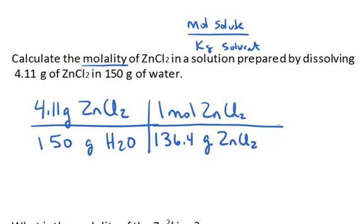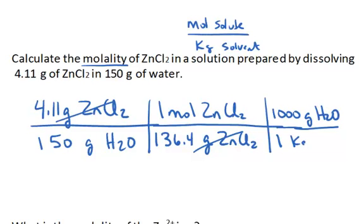Of course, I'm putting the gram unit on the bottom of my calculation because I want to convert to moles. So I'm going to cancel that gram unit. And now I just need to convert my grams of water to kilograms of water. And that's easy enough to do with my metric conversions. There's 1,000 grams of water per one kilogram of water.